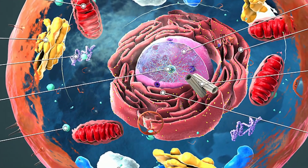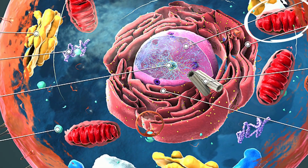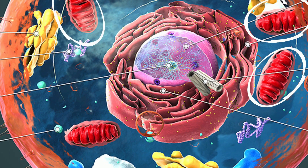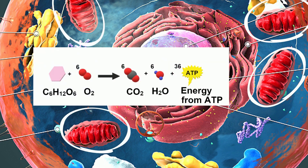The mitochondria is the powerhouse of the cell. It creates energy by taking glucose plus oxygen and makes the energy molecule ATP.